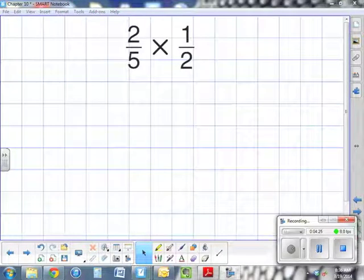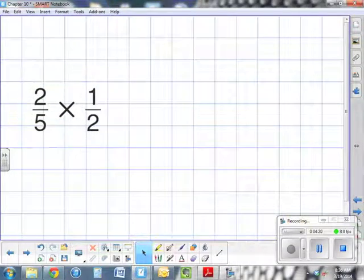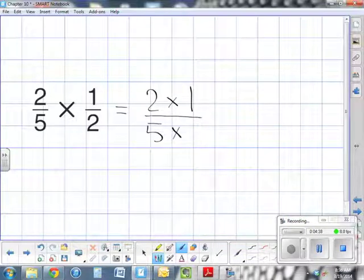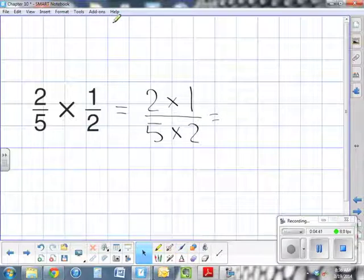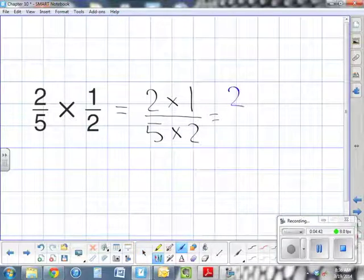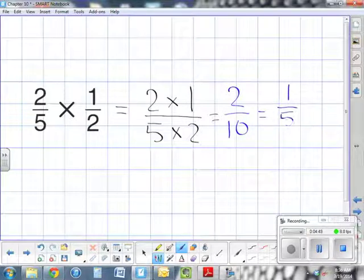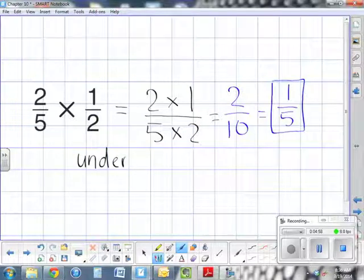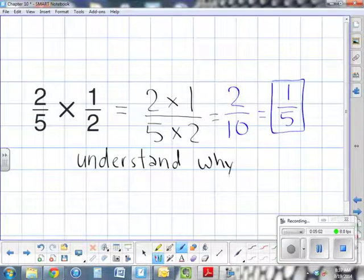For the last problem, we're going to be using the basic standard multiplication method. We have two-fifths times one-half. In this case, all we're doing is multiplying two times one and five times two. For the numerator, my answer becomes two, and for my denominator, the answer becomes ten. Put that in simplest form: the answer is one-fifth. Now you have to understand why this works. I know this seems a lot easier than using fraction models, but you have to understand why it works, and the easiest method for understanding is using fraction models.